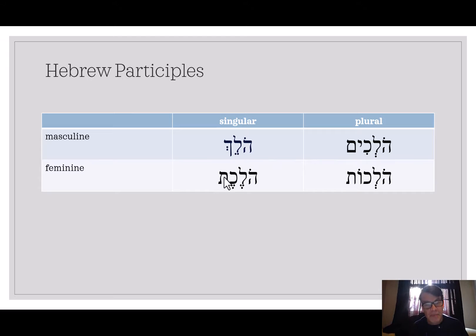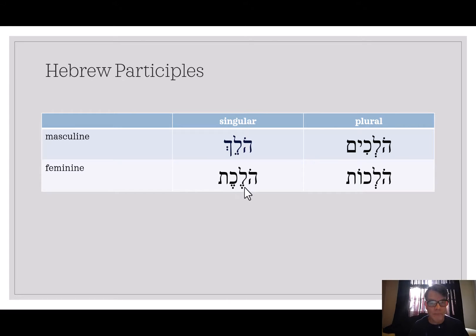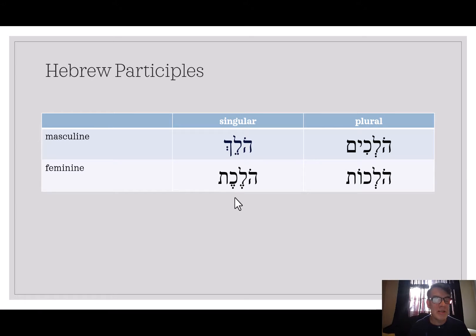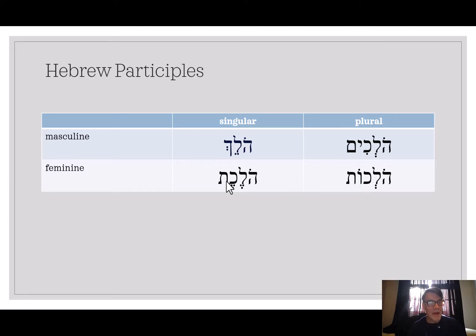This feminine singular ending is a little different. It can be HOLAKA with a KAMATZHE — that's an alternative form, and you know the KAMATZHE is a feminine singular marker. But this more common form has two SEGOLs — it's called a SEGOLet form. With a SEGOLet form, the second-to-last syllable is accented: SEGOL, SEGOL with a TAV. A TAV as the final letter is a telltale sign of a feminine singular — you're going to see that a lot.